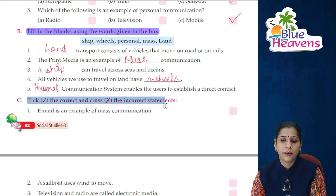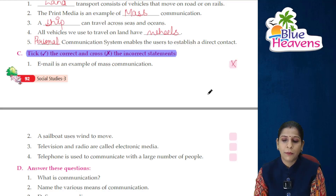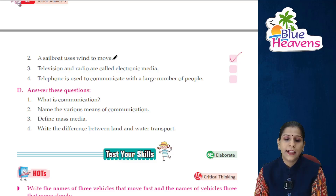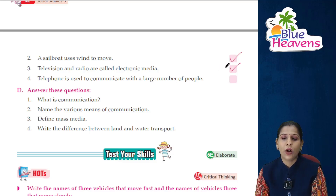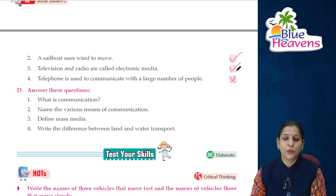Tick correct, cross incorrect: Email is an example of personal communication, not mass communication. A sailboat uses wind to move — correct. Television and radio are called electronic media — correct. Telephone is used to communicate with a particular individual, not a large number of people — incorrect statement.